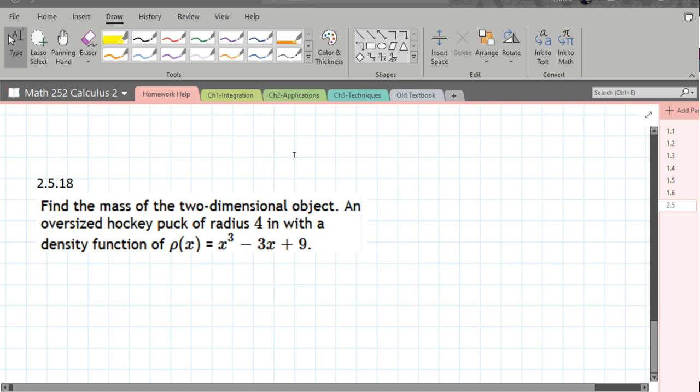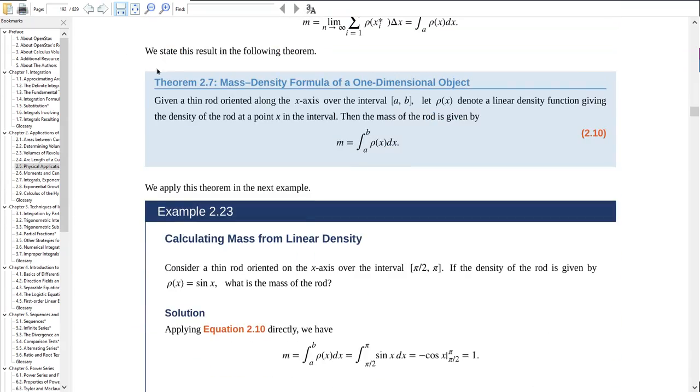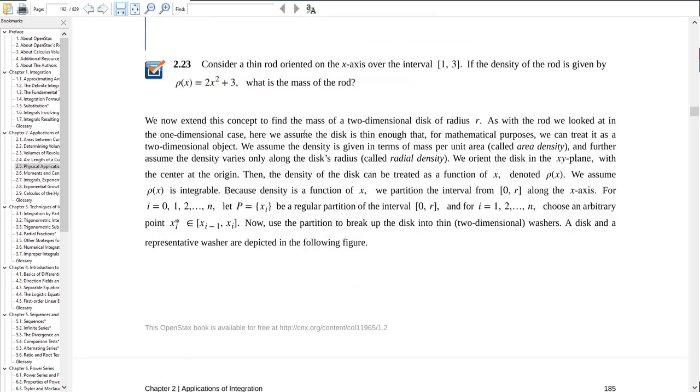We have a radius of 4, so let's run back over and scroll down. The first part is a one-dimensional mass. We don't have that. This is a linear density function. We've got the radial.